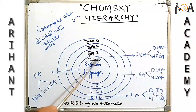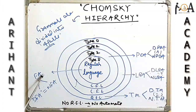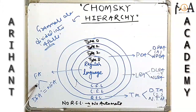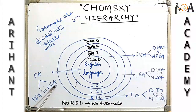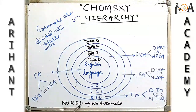Type 3 grammar is the regular grammar, which is the most restricted form of grammar. It is recognized by finite automata, which consists of two types: DFA and NFA. The power of both DFA and NFA is equal. Outside the recursively enumerable level, no automata exists.